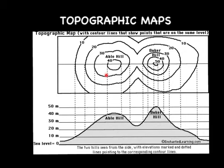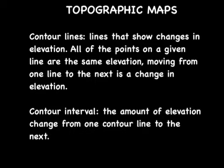Topographic map symbols and colors are standardized. Contour lines are lines that show changes in elevation. Moving from one line to the next, you're changing elevation. All of the points on a given line are the same elevation. So if you are looking at one contour line, that is all one elevation.